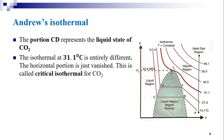At 21.5°C, the curve is similar to that for 31.1°C. However, at 21.5°C the horizontal portion corresponding to BC has decreased to FG — it is shorter. But the isothermal at 31.1°C is entirely different: the horizontal portion has just vanished. There is no horizontal portion at all, and this is called the critical isothermal for carbon dioxide.